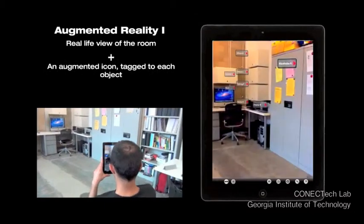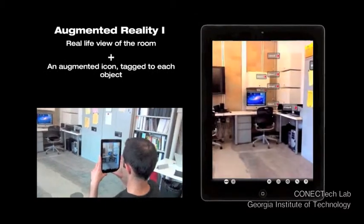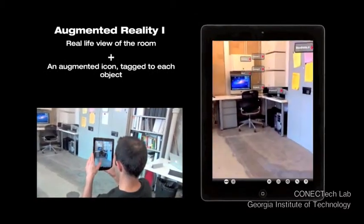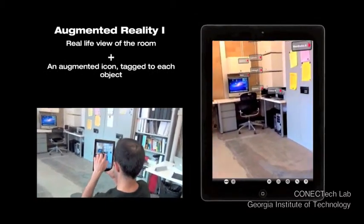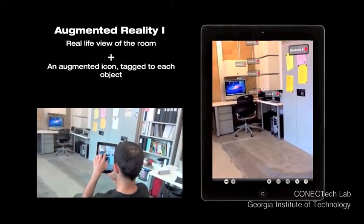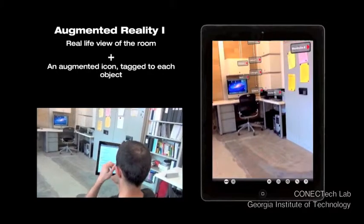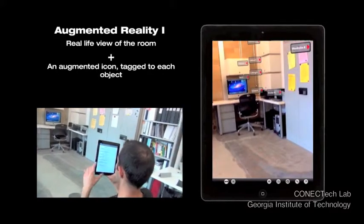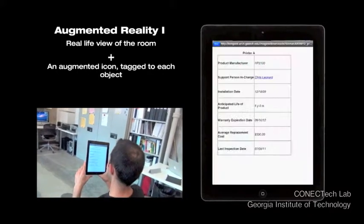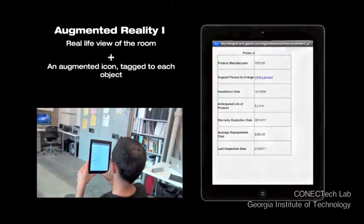In Augmented Reality 1, the real-life view of the room was augmented with tags on each of the objects, where the subject would search for information related to each of the objects.